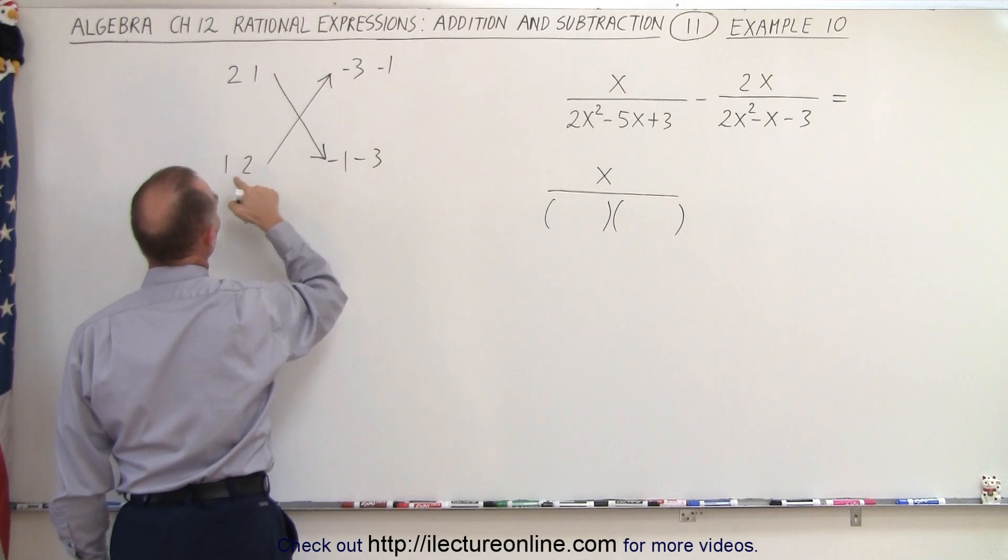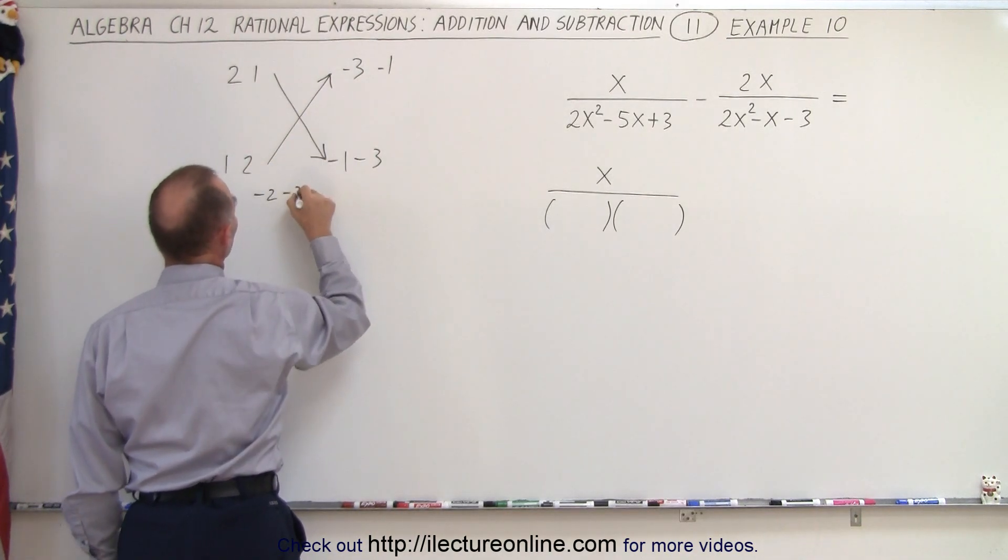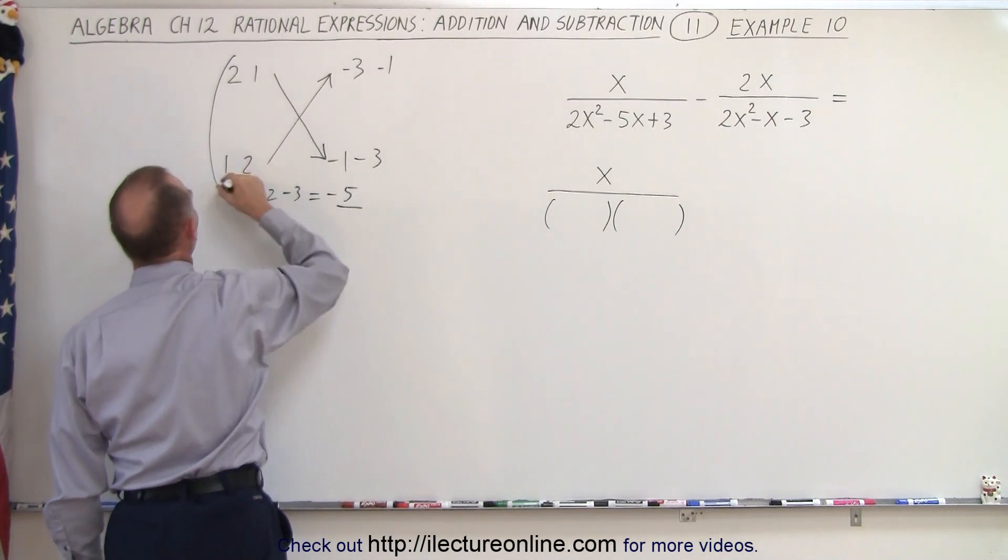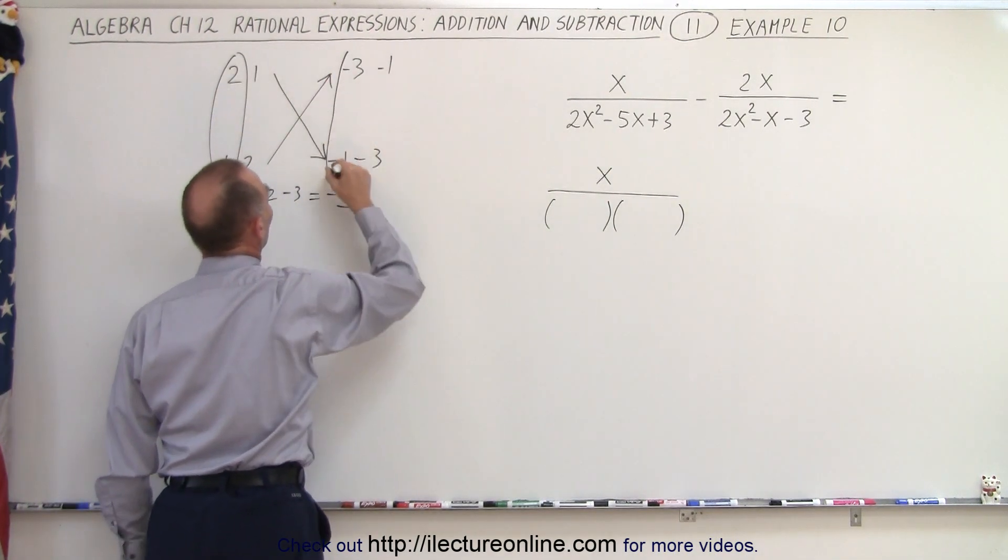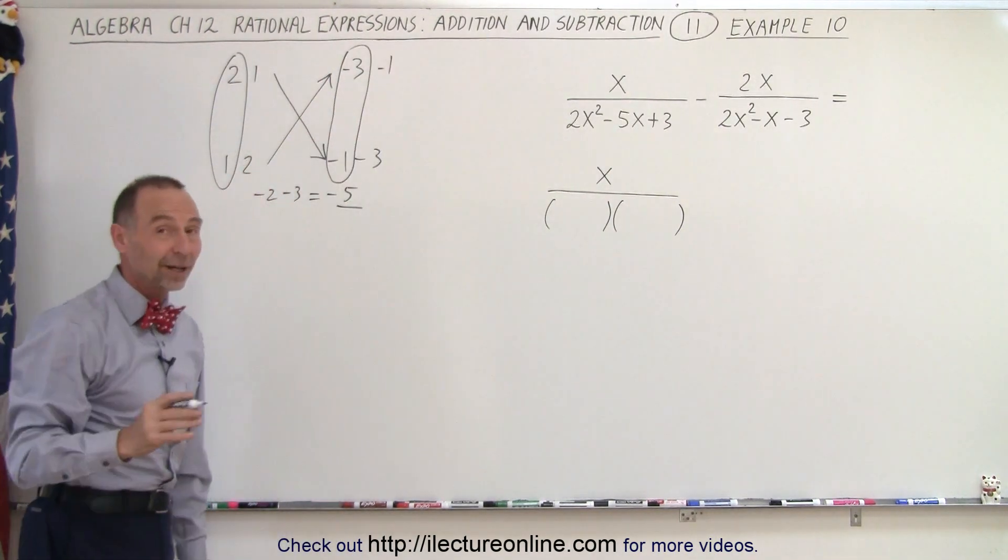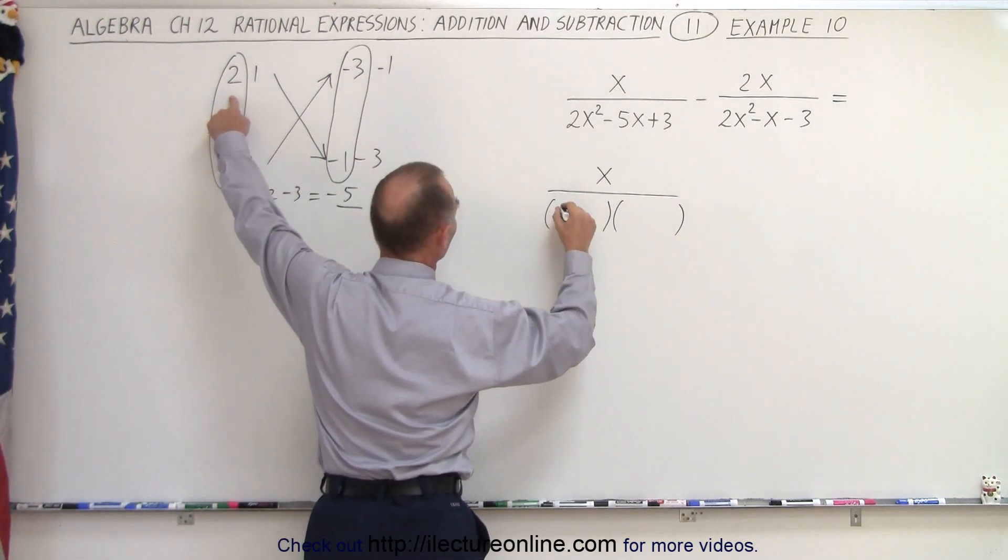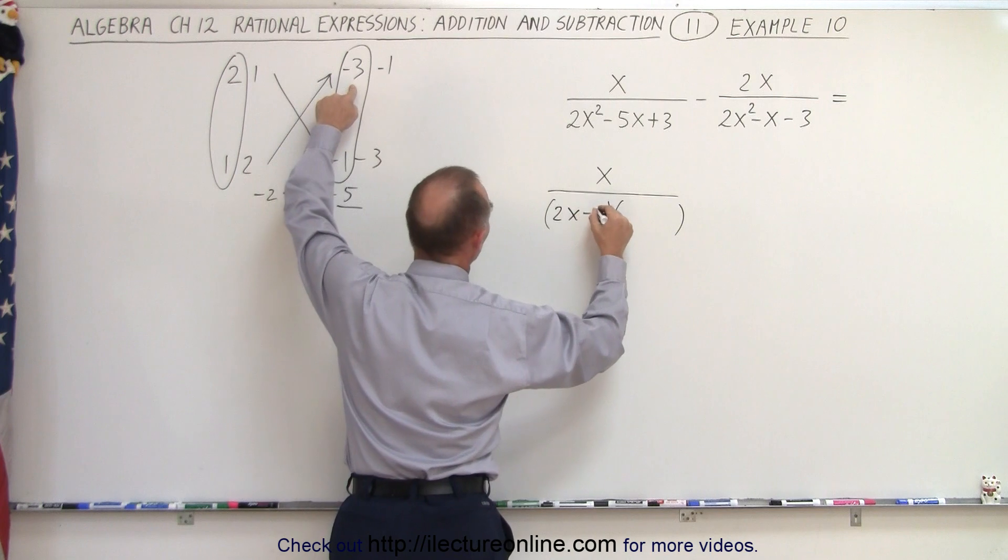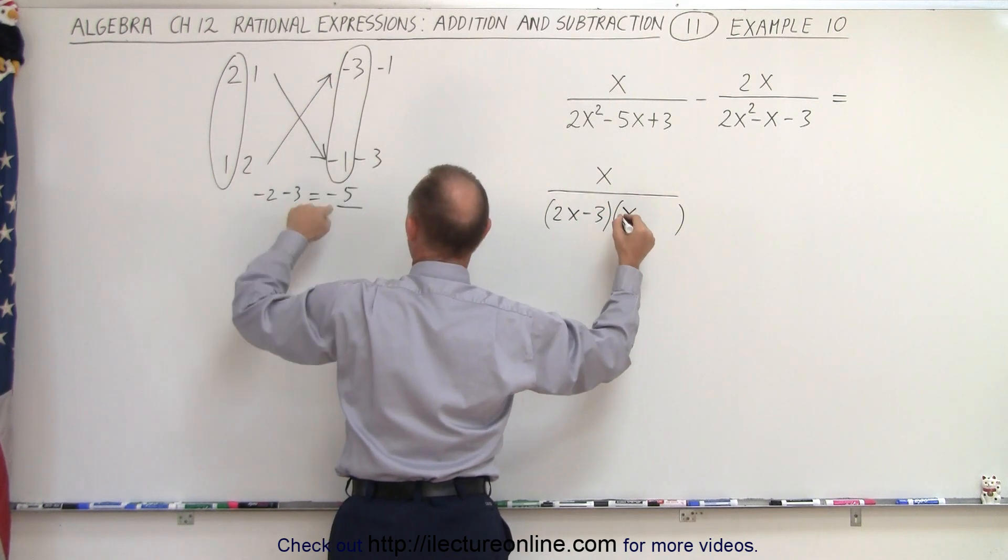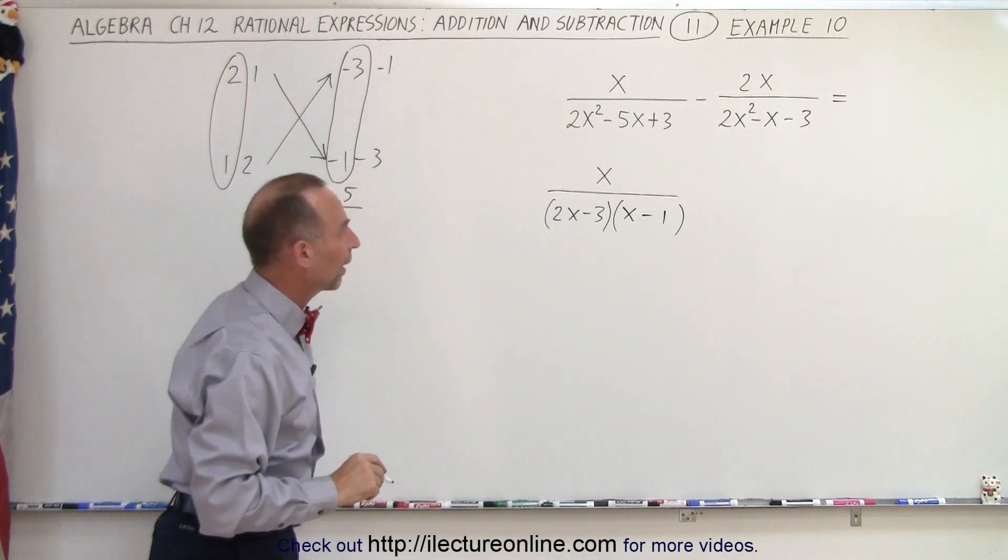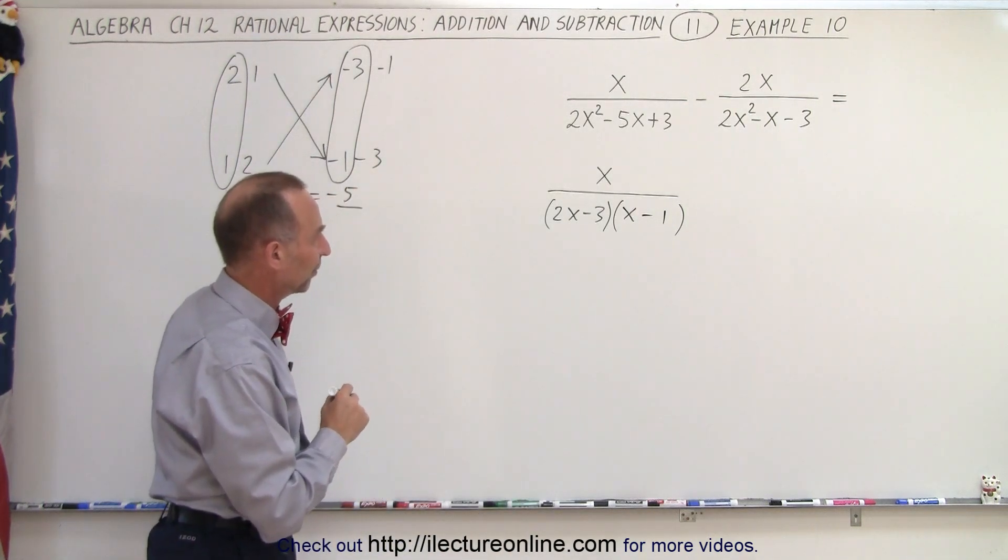2 times the negative 1 is negative 2. 1 times the negative 3 is negative 3. When you add them together, negative 5. Bingo! We have the right combination right out of the gate. So plugging that in, we have 2x minus 3 and 1x minus 1. And that adds up to the correct 2x squared minus 5x plus 3.